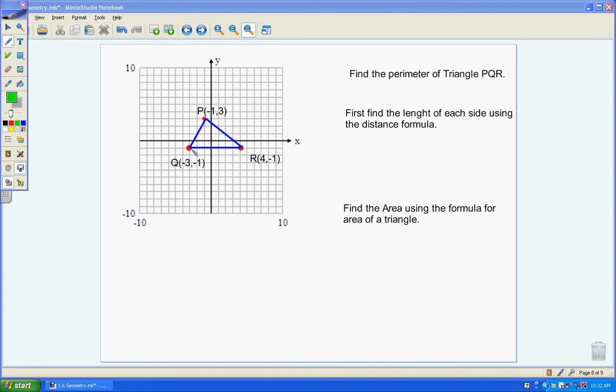Since the bottom line is a straight line, we can count how many units there are from one point to the other. So there will be 1, 2, 3, 4, 5, 6, 7. So this side is 7 units long.